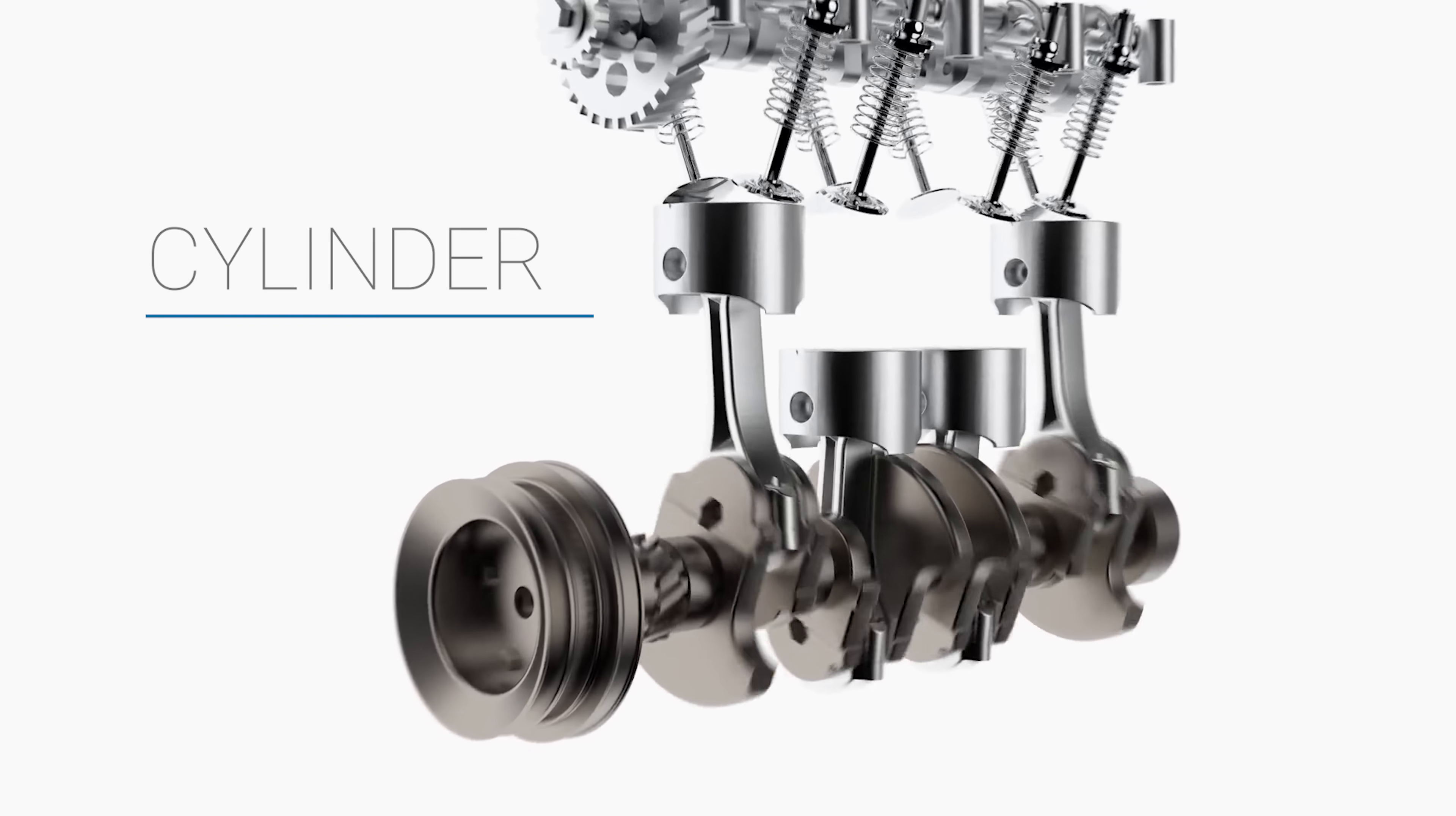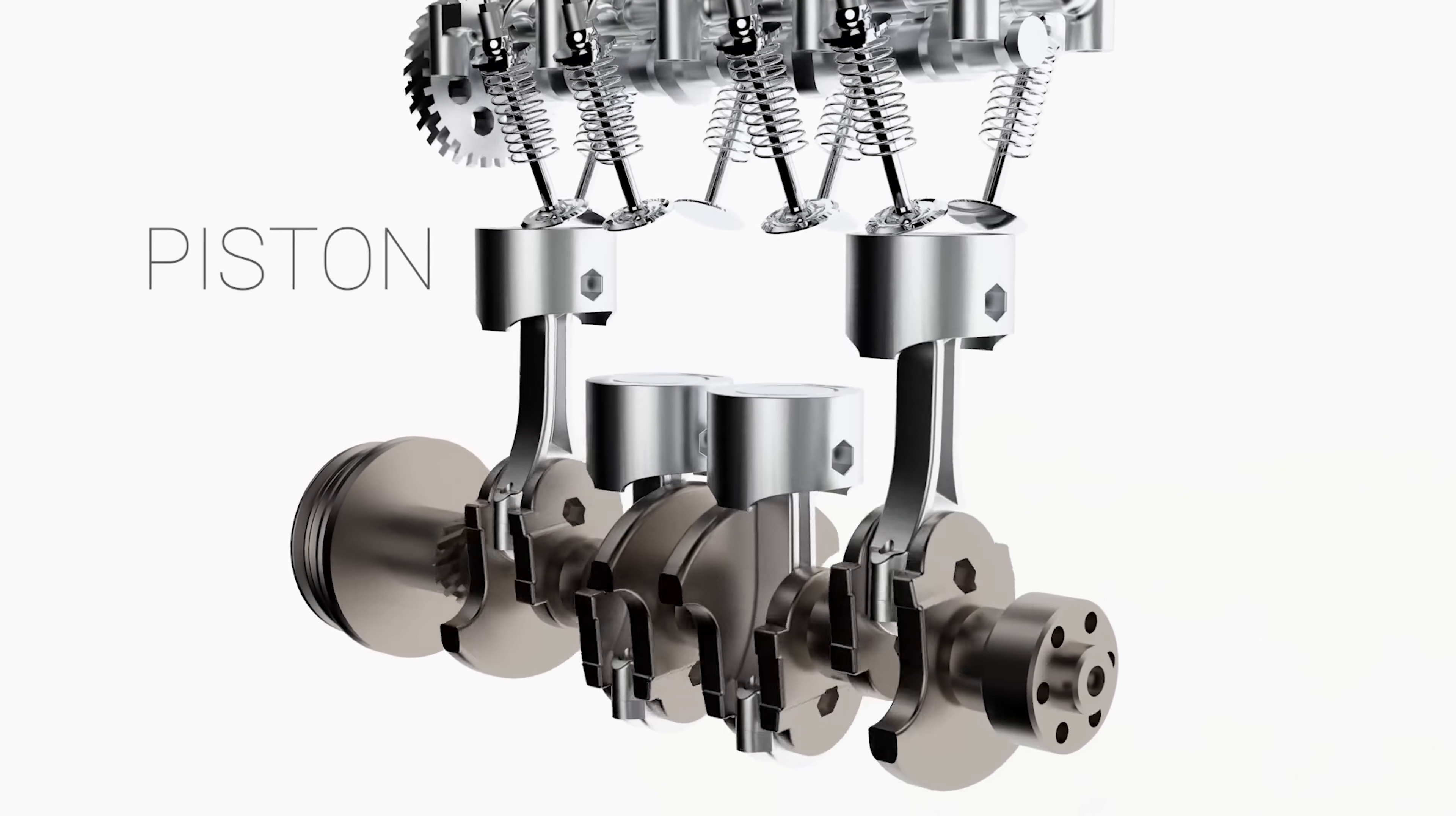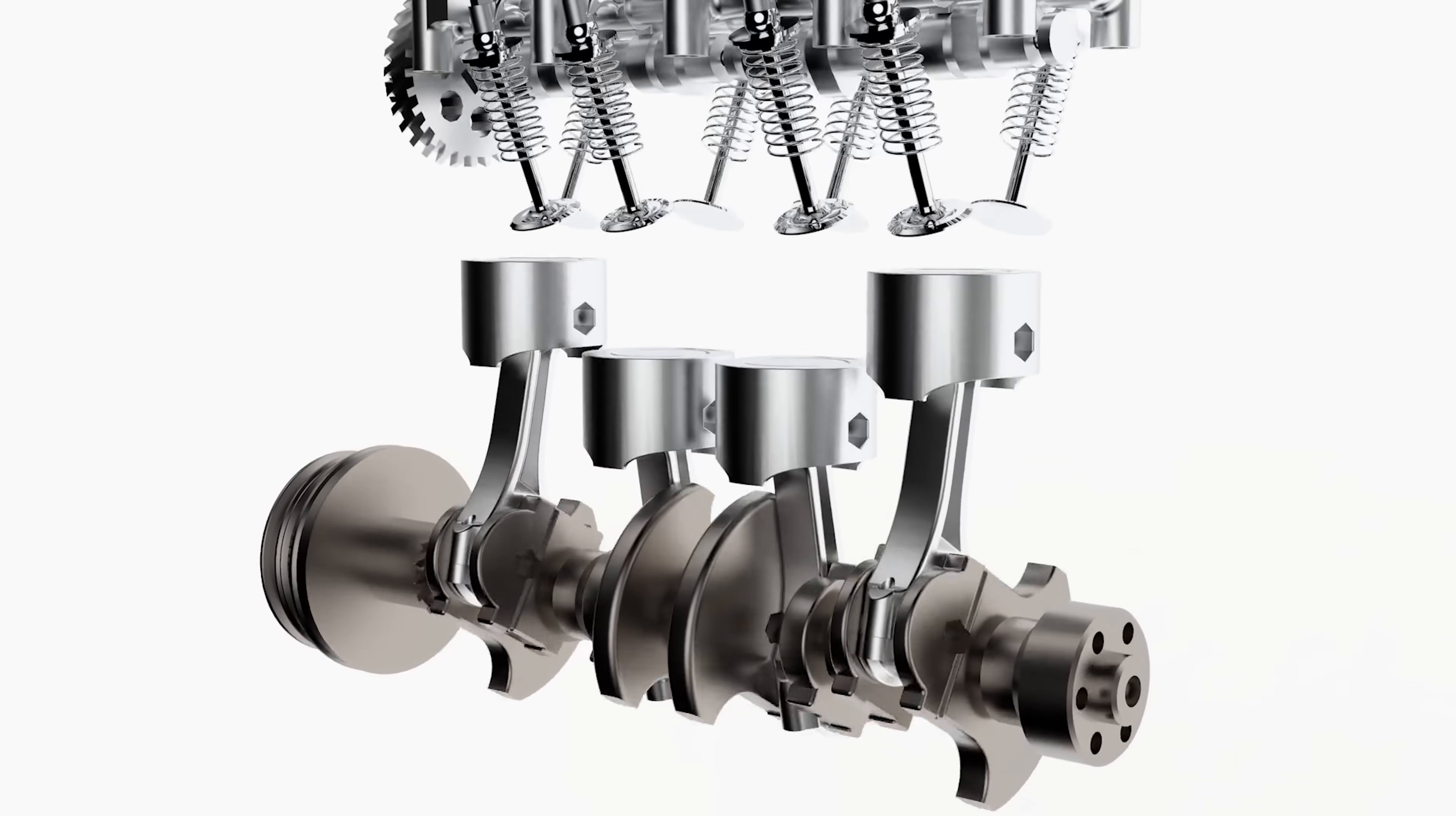It all takes place inside the cylinder. Here we can find the combustion chamber, where the explosions occur. The cylinder is basically the space through which the piston travels. The purpose of the piston is to transfer force from expanding gas in the cylinder to the crankshaft via a piston rod or a connecting rod.